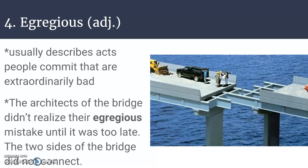Number four is egregious, which is an adjective. The definition for egregious is outstandingly bad, extraordinary in some bad way, or shocking. This is usually going to describe acts that people commit that are extraordinarily bad. The architects of the bridge didn't realize their egregious mistake until it was too late — the two sides of the bridge did not connect. That is a very extraordinarily bad thing to have happen.